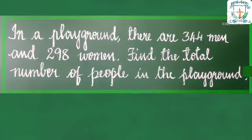Example 1: In a playground, there are 344 men and 298 women. Find the total number of people in the playground.